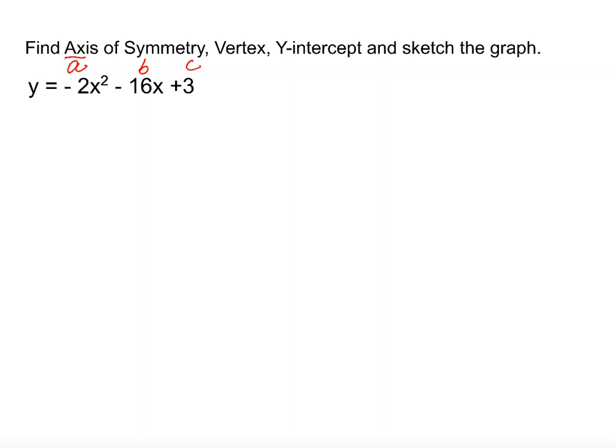First thing I want to do is axis of symmetry. So I'm going to find the axis of symmetry. The formula is x equals negative b divided by 2a. Alright, so let's substitute. We have negative 16 divided by 2 times a negative 2. That equals 16 divided by negative 4, which equals negative 4. So the axis of symmetry is x equals negative 4.